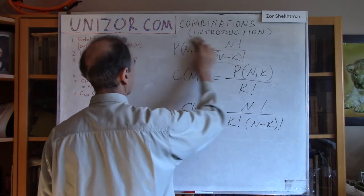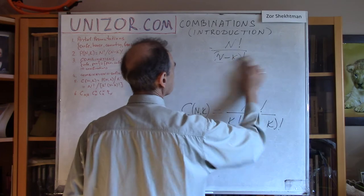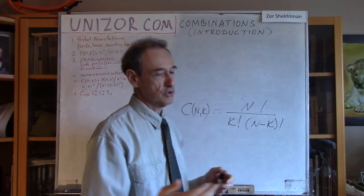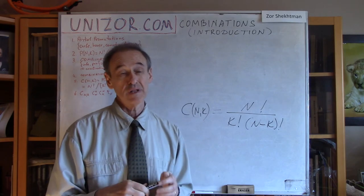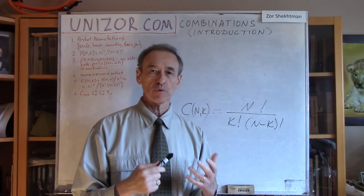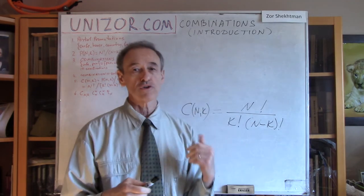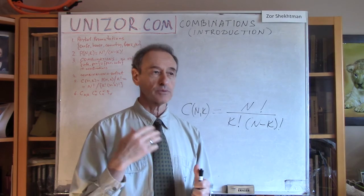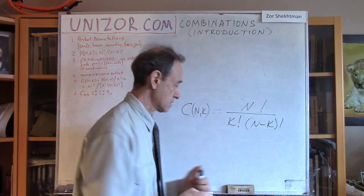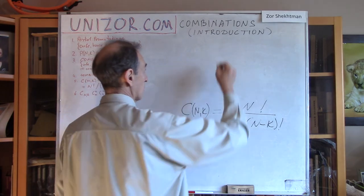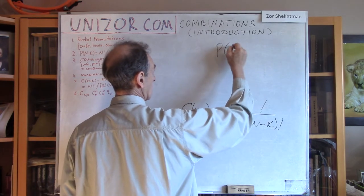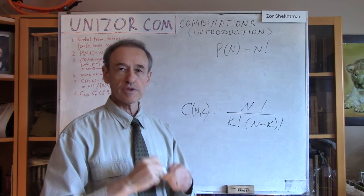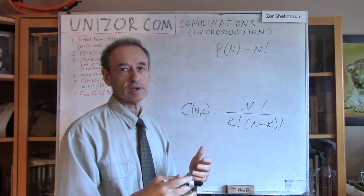Now, before going any further, personally I was thinking: we actually heavily rely on the formula for partial permutations, which is not a simple formula. I would say that the formula for regular permutations — permutations of n objects — n factorial, is simple and the logic is very, very straightforward.